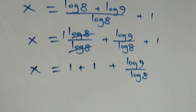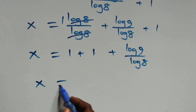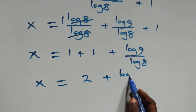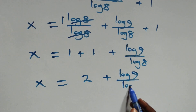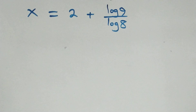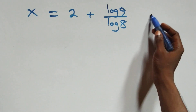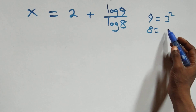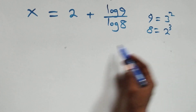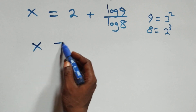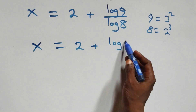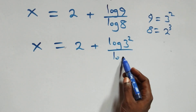This gives us x equals 1 plus 1 — that is 2 — plus log 9 over log 8. Next, we can rewrite 9 as 3 times 3, which is 3 squared, and 8 as 2 times 2 times 2, which is 2 cubed. So x equals 2 plus log 3 squared over log 2 cubed.